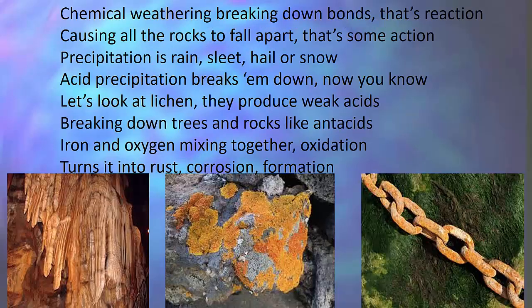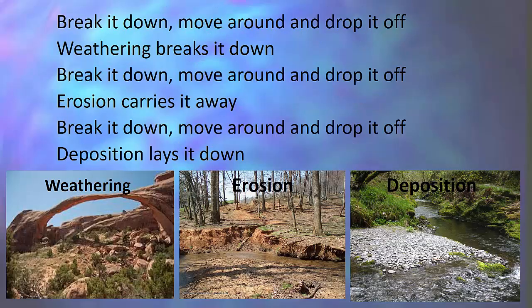Chemical weathering: breaking down bonds, that's a reaction causing all the rocks to fall apart. Precipitation is rain, sleet, hail, or snow. Acid precipitation breaks them down — now you know. Lichen produces weak acids, breaking down trees and rocks like an acid. Iron and oxygen mixing together — oxidation turns it into rust, corrosion formation.